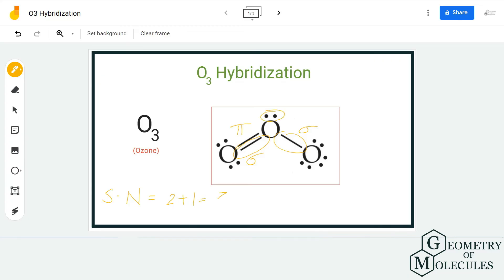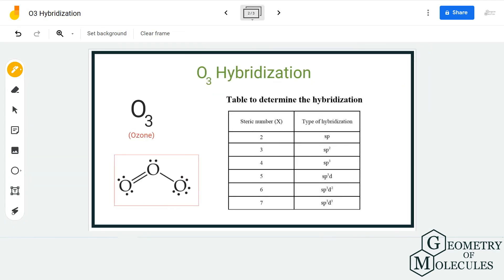Besides that, we have one lone pair of electrons on the central atom, so we are going to consider that. Hence, the steric number is 3 for this ozone molecule. Now when you look at this table, you can see that steric number 3 corresponds to sp2 hybridization.